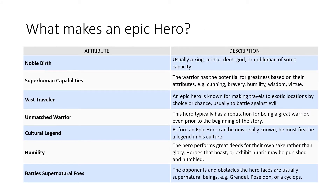So, what makes up an epic hero? First, of noble birth — often a king or a prince. They also have superhuman capabilities — they might be a superhuman with one thing they are very good at, or like Beowulf, super strong and brave. He's able to rip the arm off the Grendel, which a normal human wouldn't be able to do.